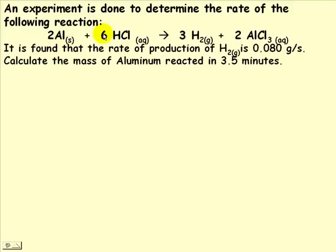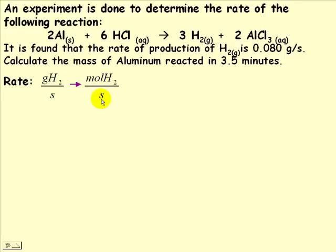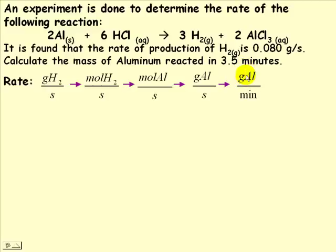In this problem, we use the reaction of aluminum plus hydrochloric acid giving hydrogen gas and aluminum chloride. The rate of production of hydrogen gas is 0.08 grams of hydrogen per second, and we need to find the mass of aluminum reacted in 3.5 minutes. We'll need to convert grams of hydrogen per second → moles of hydrogen per second → moles of aluminum per second → grams of aluminum per second → grams of aluminum per minute, then multiply by time.